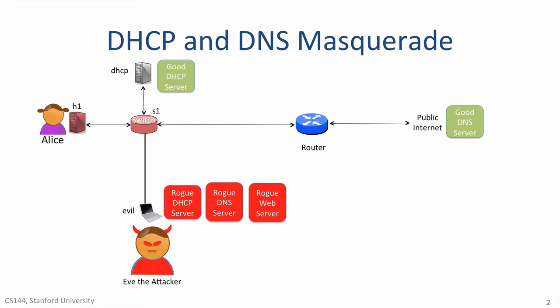Initially, we'll assume that Eve has not started her attack, and we'll see a Mininet demo of the good DHCP server correctly configuring Alice's machine so that she can access the internet just fine. Then we'll see what happens if Eve's machine masquerades as the local DHCP server, replying faster than the good DHCP server, and configuring Alice's machine to use the rogue DNS server, directing Alice's web traffic to Eve's server as well. Let's see what happens.